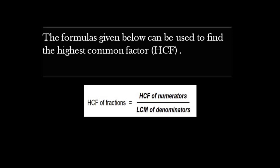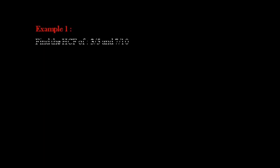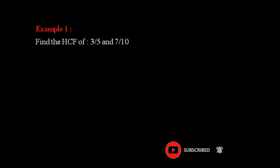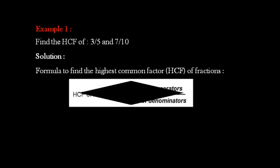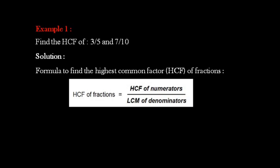The first example: find the highest common factor of 3 divided by 5 and 7 divided by 10. First, we apply the formula from the previous slide — HCF is equal to HCF of the numerators divided by LCM of the denominators.